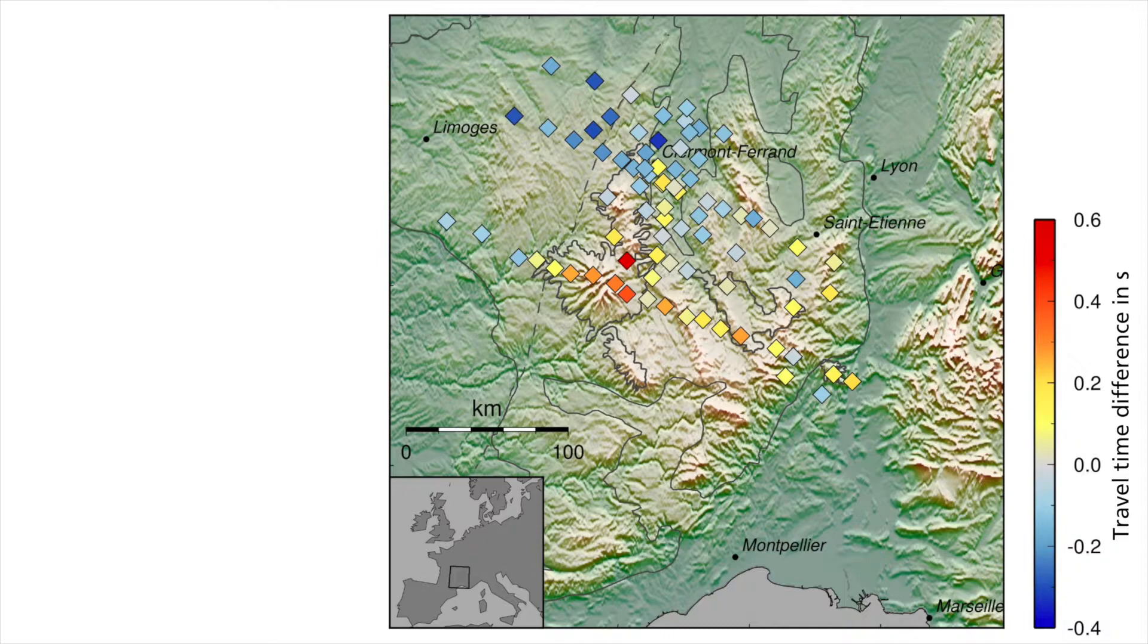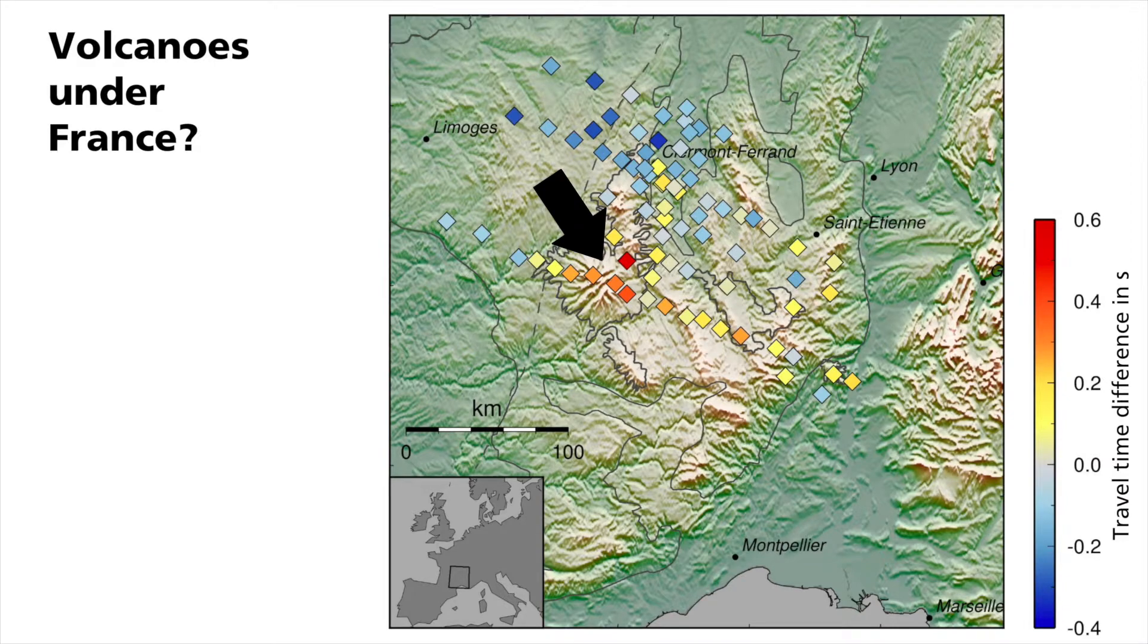Reddish colors show delayed arrivals, while bluish ones show arrivals earlier than expected. We see that the propagation velocity of the waves appears to slow down under the extinct volcanoes. This might be an indication of volcanic residual heat under the ground. But where exactly underground is this anomaly located?